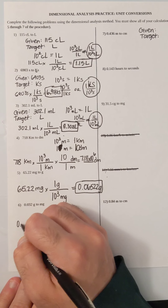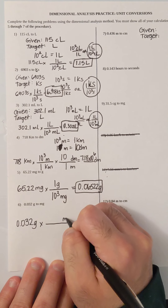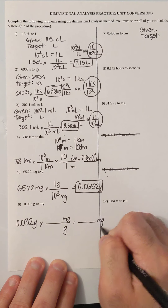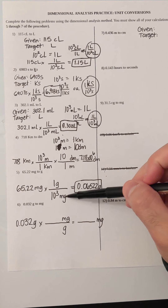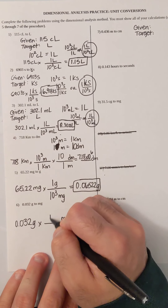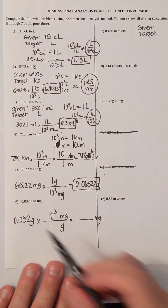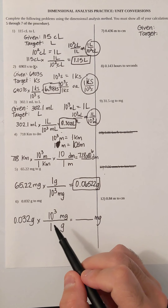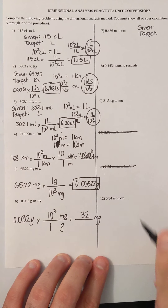So 0.032 grams to milligrams — I'm doing the opposite. I need to have milligrams on top, and if I start with grams, I need grams on the bottom. If I have milligrams, I know that 10 to the third milligrams is one gram, so that 10 to the third stays with the milligrams. I'm going to put 10 to the third milligrams on top and one gram on the bottom. So I'll be doing 0.032 times 10 to the third divided by one, and I get 32 milligrams.